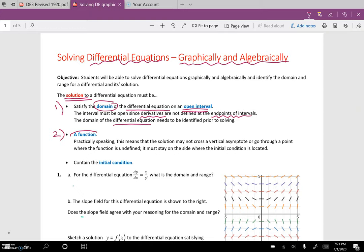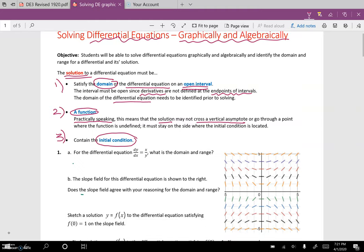Second, your solution must be a function. In other words, it has to pass the vertical line test. Practically speaking, when you're graphing it, this means the solution cannot cross a vertical asymptote. And the third criteria is that if you're given a point that the solution goes through, it has to contain that condition. So let's do an example together.